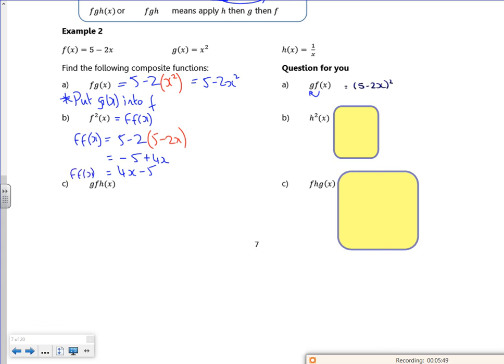So this one's h of h. So I've got 1 over x, and then I replace the x with 1 over x. So I had 1 over x, and I replaced the x with 1 over x, which gives me x.